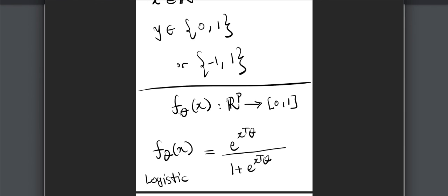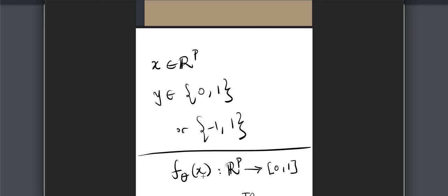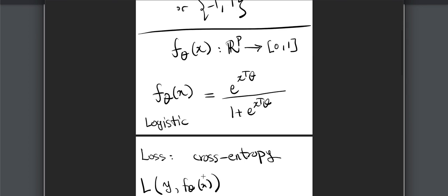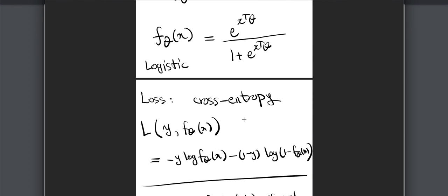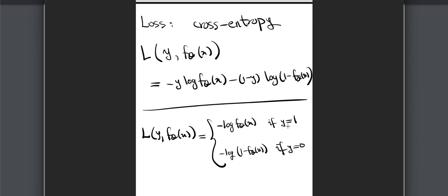Once we have this function, how can we measure how well it fits our data? One option is misclassification error, but something more useful for technical reasons is cross-entropy. The loss between the data and the model f_theta(x) is measured as: minus y times log(f_theta(x)) minus (1 minus y) times log(1 minus f_theta(x)).